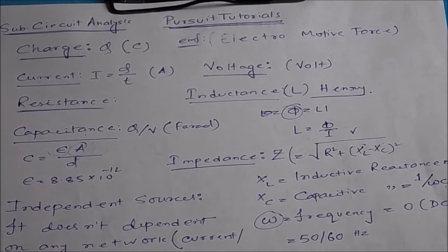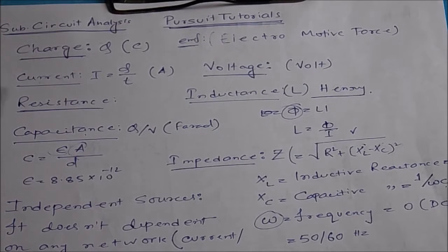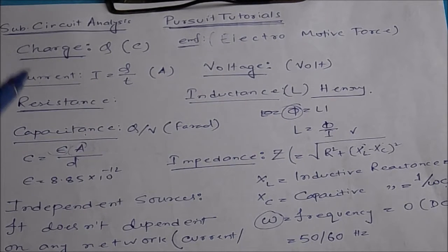Then we have resistance. Any kind of material, when charges flow through it, offers some kind of resistance or hindrance. The physical term for that hindrance is known as resistance. Charge, voltage, current, and resistance are generalized terms applicable for both DC circuits as well as AC circuits.